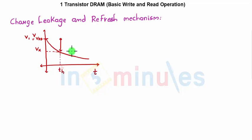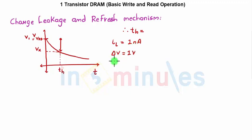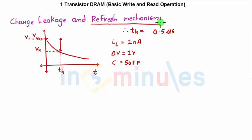That's the reason we need a refresh mechanism. In a previous clip, assuming leakage currents as high as 1 nanoampere, a change in voltage equal to 1 V, and a capacitor value of 50 femtofarads, the hold time was found to be 0.5 microseconds. So the capacitor can hold its value for only 0.5 microseconds, after which it loses its value. We need a refresh cycle happening after every interval of time. The frequency of refresh is approximately equal to 1/(2 × t_h), where t_h is the hold time.